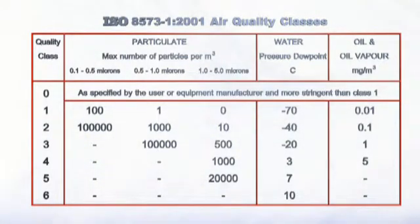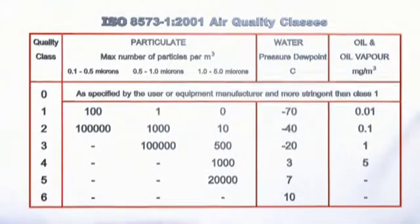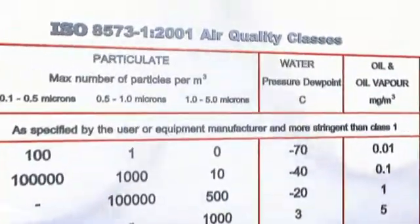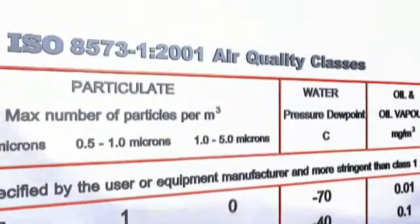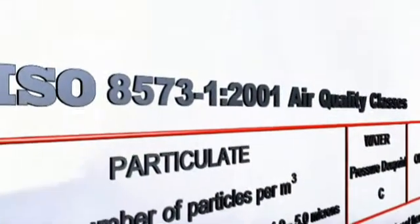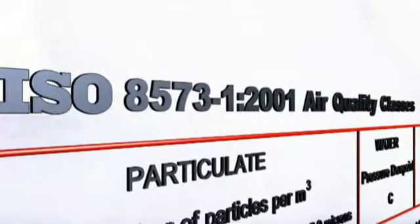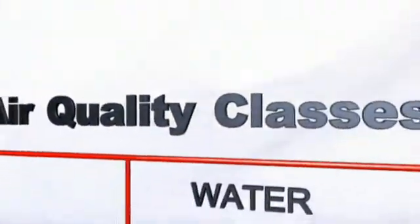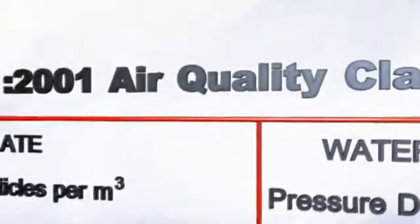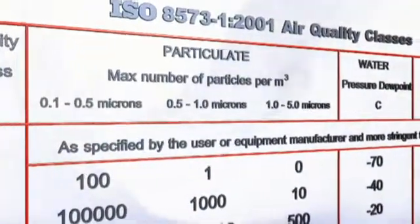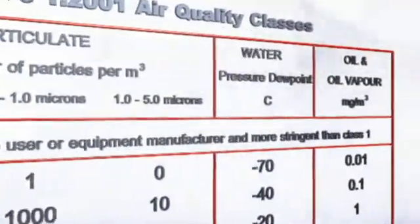Defining and controlling air quality is so important that the International Standards Organization, ISO, developed several compressed air quality classes, defined by their specification ISO 8573 Part 1. Allowable levels of contaminants are defined in three categories: particulate, water, and oil.